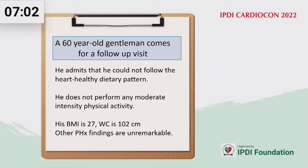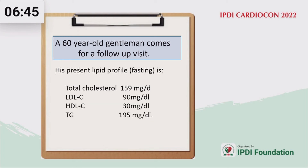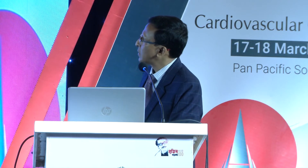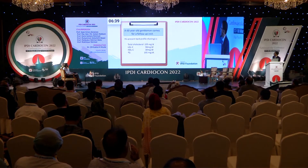He admits he could not follow a heart-healthy dietary pattern and does not perform any moderate-intensity physical activity. His BMI is 27 and his waist circumference is 102 — indicating abdominal obesity. Other physical findings are unremarkable. His current lipid profile: total cholesterol 159, LDL 90, HDL 30, and TG 195.